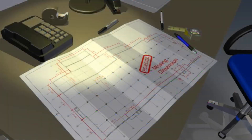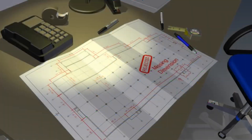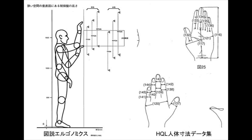One of the often used methods for planning the ergonomics is the building of cardboard mockups of the future devices. This helps to determine the ergonomics of the work at specific workstations.